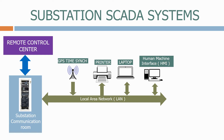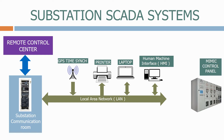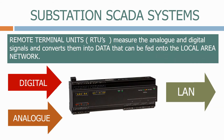We normally have a MIMIC control panel from which the operators can open and close the equipment and monitor any alarms that come up on the station. To connect the MIMIC control panel to the LAN network we use a Remote Terminal Unit or RTU. Remote Terminal Units measure the analogue and digital signals and convert them into data that can be fed onto the local area network.